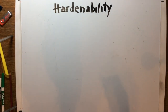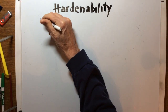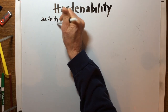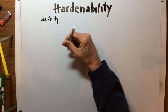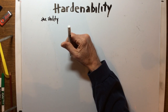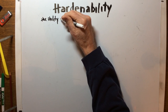The first thing we need to do would be to adequately define this. Hardenability is the ability of a steel to partially or completely transform from austenite to some fraction of martensite at a given depth below the surface when cooled, or what we call quenched, under a given condition from high temperature.